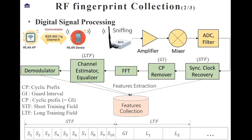The digital signal processing at the receiver is shown in the figure. The timeline is related to the sequence of DSP operations, so you can easily understand the operation of STF and LTF respectively from the green blocks. When we use the SDR platform to receive the signal, we extract the signal features from them.